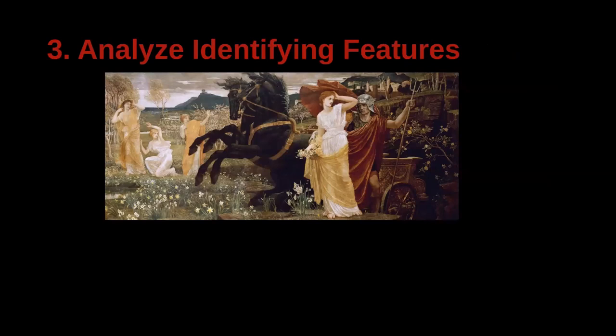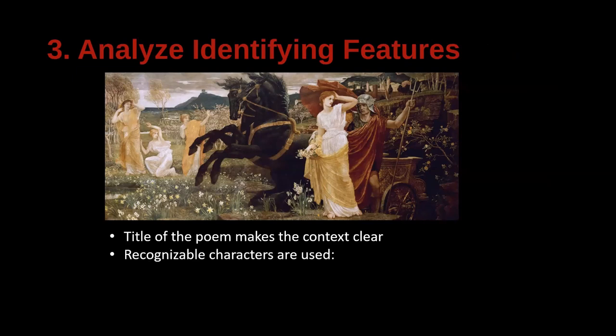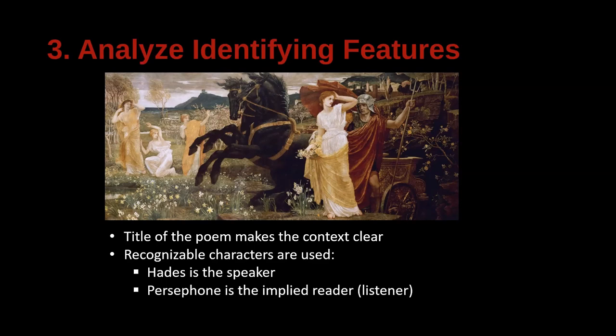We can identify the features between the original story and the poem that allow us to see the poem as an adaptation. The title 'Hades Welcomes His Bride' makes the context very clear — it gives a key plot point and a name that links the two together. Recognizable characters are used: Hades is the speaker and Persephone is the implied listener, since it's a dramatic monologue. Like in the myth, Persephone also has no voice. In all tellings of the myth, things that happen to Persephone are described, but her perspective and experience are never really shown — and that's true in the poem as well, where everything is filtered through the voice and gaze of Hades.